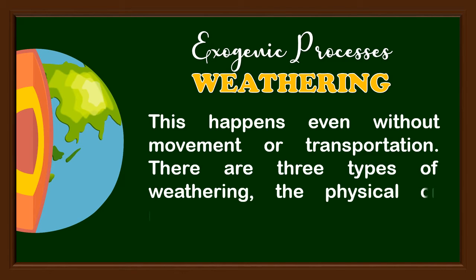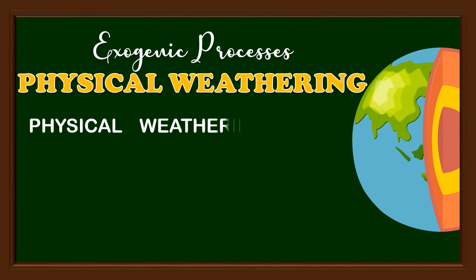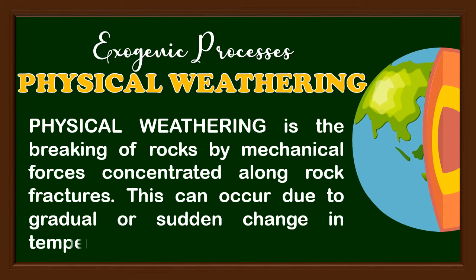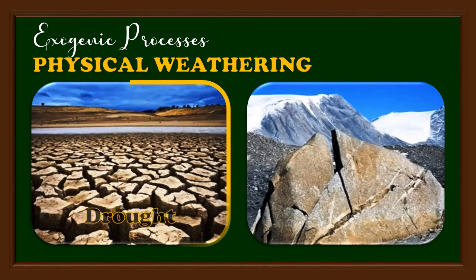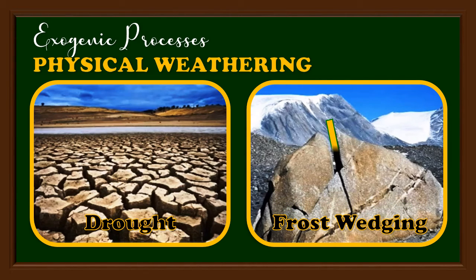There are three types of weathering: physical or mechanical, biological, and chemical weathering. Physical weathering is the breaking of rocks by mechanical forces concentrated along rock fractures. This can occur due to gradual or sudden changes in temperature and pressure. Soil cracks because of extreme heat or drought, and in some cases water and wind may abrade or scrape rock or soil. Cracks in rocks are also caused by frost wedging — when precipitation fills cracks, the water freezes and expands, exerting pressure on both sides of the rock and forcing it apart. This cycle continues until the rock eventually splits all the way down.